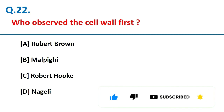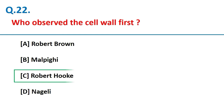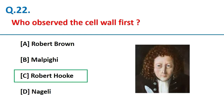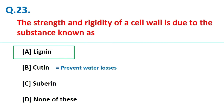The cell wall was first observed by Robert Hooke. The strength and rigidity of a cell wall is due to a substance known as lignin. Cutin in the cell wall prevents water loss, and suberin is impermeable to water.